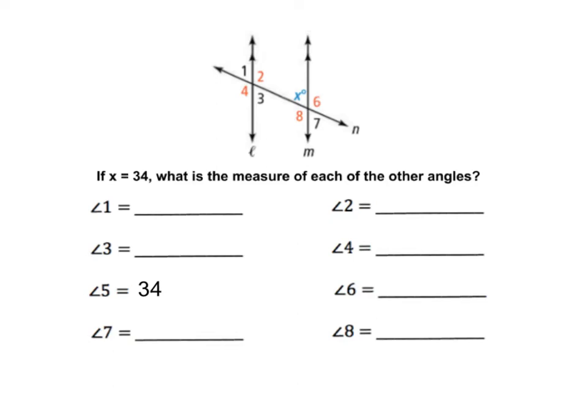If we give you one of these eight angles, you can use those properties to find the measures of all the other angles. Because for each angle pair, we know it's either going to be congruent, so the same measure, or supplementary, which means they have to total to 180.